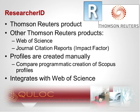Moving now to Researcher ID — this is a Thomson Reuters product, alongside other Thomson Reuters products you're probably familiar with: Web of Science and the impact factor in journal citation reports. Unlike the programmatic creation of profiles in Scopus, Researcher ID profiles are created manually. This means there's more work involved in setting up a profile, but has the benefit that researchers have full control over their profile and don't need to submit requests for changes. Researcher ID integrates with Web of Science, similarly to how Scopus profiles and the Scopus database are presented as a single product.